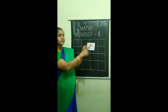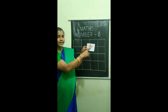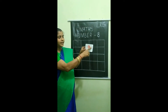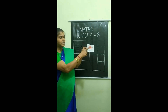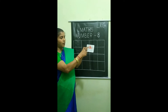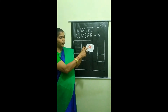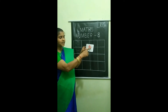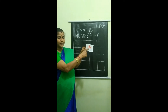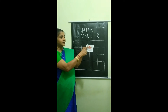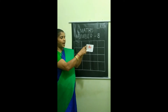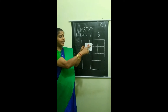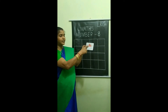This is an octopus. This part is called tentacles. Let's count: 1, 2, 3, 4, 5, 6, 7, 8. An octopus has 8 tentacles.